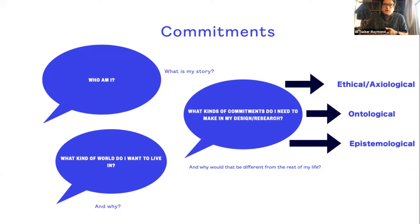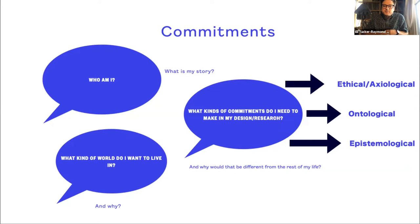I want to talk about three questions that inform my choice not only of learning theories, but also the research methodologies I use to understand learning. These questions are: who am I, what kind of world do I want to see, and what kinds of commitments do I need to make in my design research to work toward that vision? I didn't start with these three questions. Long ago, I was a classroom teacher, and although I had ideas about what it meant to learn — engage children in as many different ways as possible, let them author their own stories, give them an opportunity for choice — I really didn't have a theory of learning. Over the past 25 years, those ideas have developed. They break down into three commitments: ethical/axiological, ontological, and epistemological.